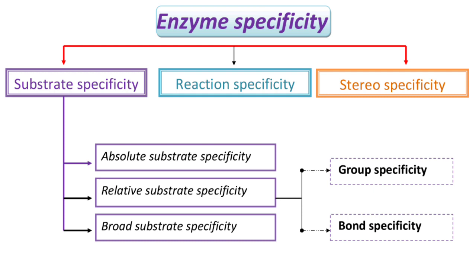Substrate specificity is further classified into absolute, relative, and broad substrate specificity. Among these three, relative substrate specificity is further classified into group specificity and bond specificity. Now we will see each type of specificity in detail.